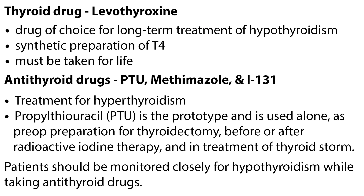Let's do a quick review. Thyroid hormones are required for normal growth and development and are considered especially critical for brain and skeletal development and maturation. Levothyroxine is the thyroid drug of choice for long-term treatment of hypothyroidism; it is a synthetic preparation of T4 and must be taken for life. Antithyroid drugs used to treat hyperthyroidism include propylthiouracil or PTU, which is the prototype and can be used alone as pre-op preparation for thyroidectomy, before or after radioactive iodine therapy, and in treatment of thyroid storm. Other antithyroid drugs include methimazole and radioactive iodine. Patients should be monitored closely for hypothyroidism while taking antithyroid drugs.